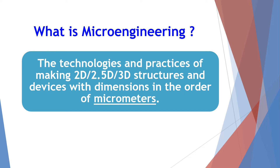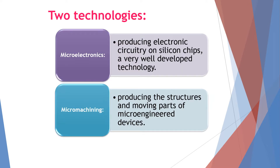Since we want to produce the micro product, we need micro engineering. Micro engineering involves the technologies and practices in order to make structures — whether it's 2D, 2.5D, or 3D — and these devices must function with dimensions of micrometers. These technologies were divided into two: micro electronics, which involves producing electronic circuitry and silicon chips, and this process and technology is a very well-developed technology.